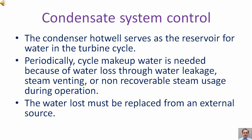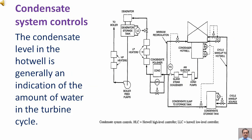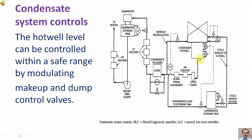The condenser hot well serves as the reservoir for water in the turbine cycle. Periodically, cycle make-up water is needed because of water loss through water leakage, steam venting, or non-recoverable steam usage during operation. The water loss must be replaced from an external source. The condensate level in the hot well is generally an indication of the amount of water in the turbine cycle.